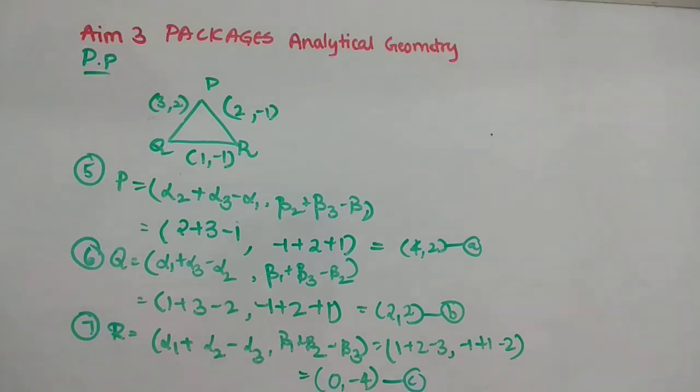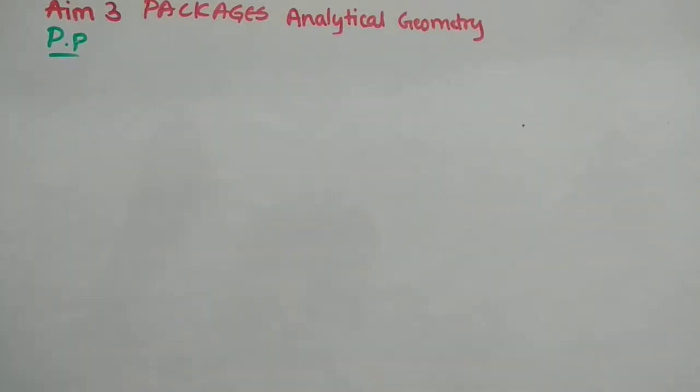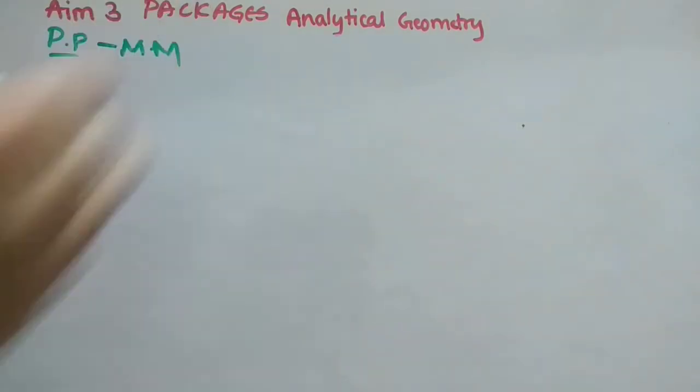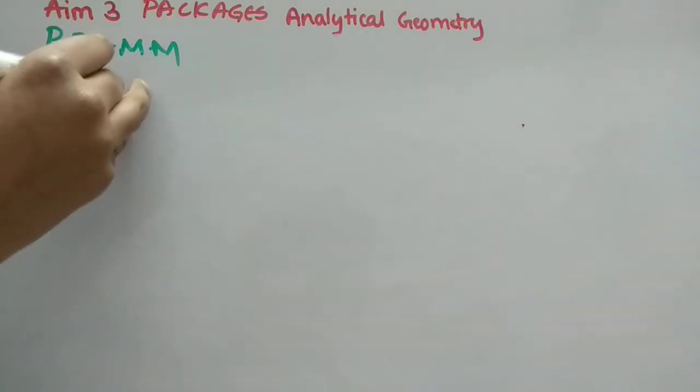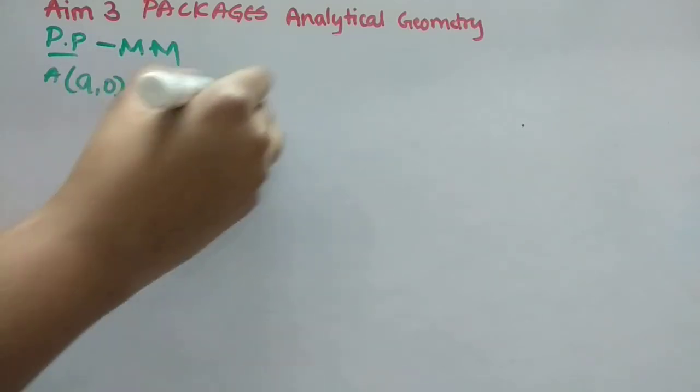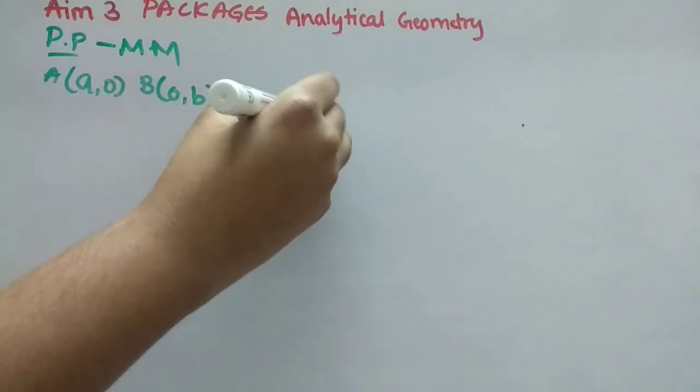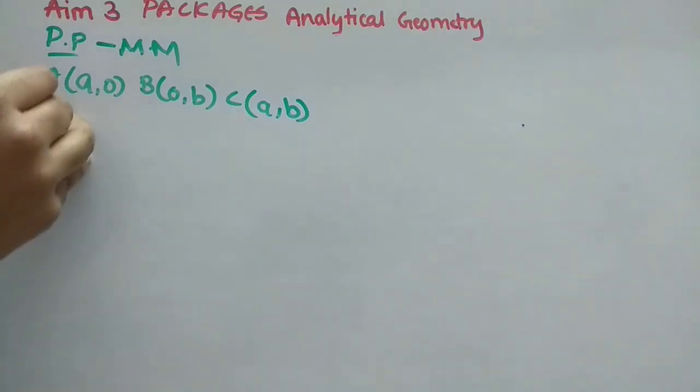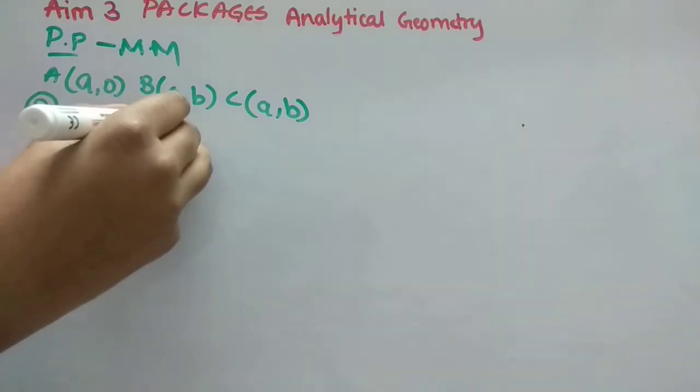So, now we will see the remaining matrix match. So, matrix matching, eighth question, right? So, eighth question, what we have to find there, first I will read. We have to find the centroid for the triangle. So, all the values are given. So first, eighth question is to find the centroid for triangle A, B, C.